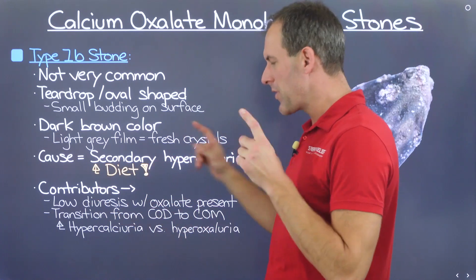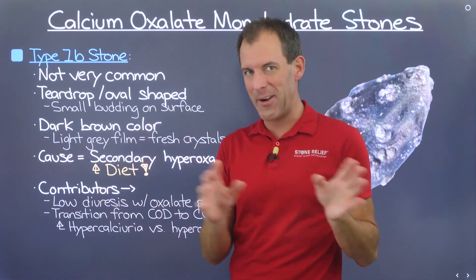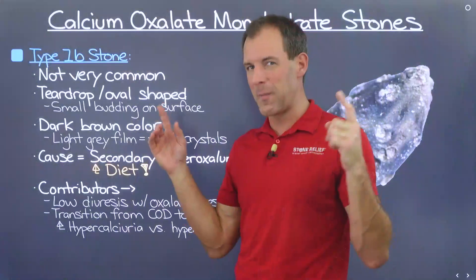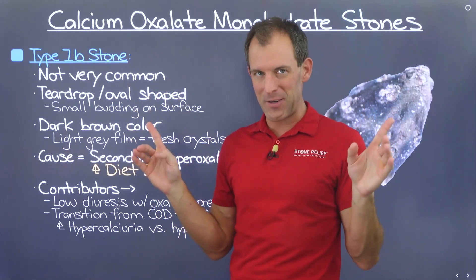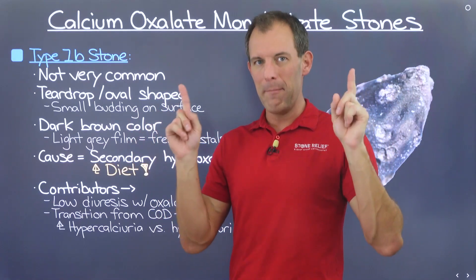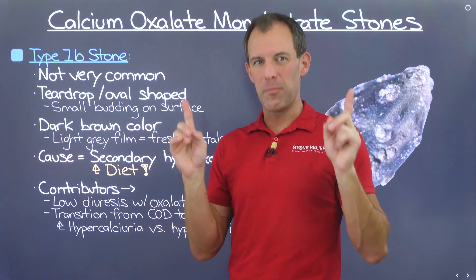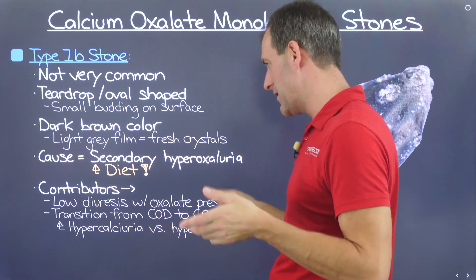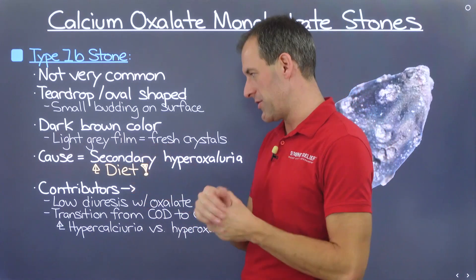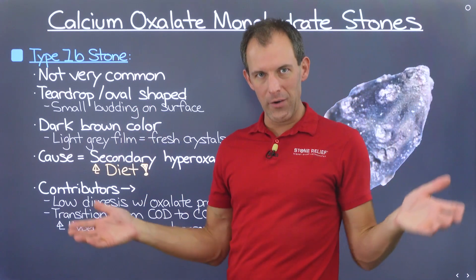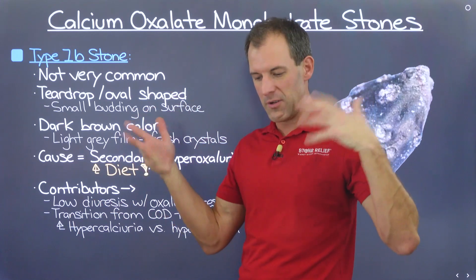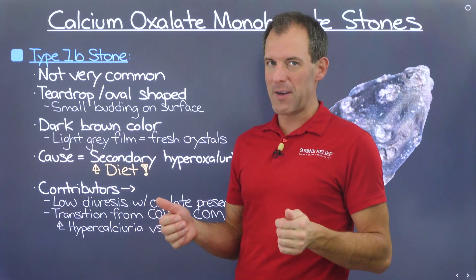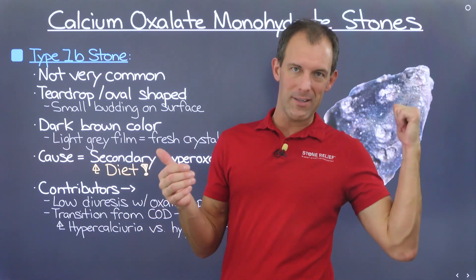The cause of this is still diet — secondary hyperoxaluria, the things we're eating. If we're forming this stone type or any calcium oxalate stone type, we lack the metabolic machinery to process this plant toxin like the rest of the population. Contributing factors include low diuresis — low urinary volume whether due to insufficient water intake or other factors — allowing calcium oxalate to mingle, crystallize, and aggregate into these stones.